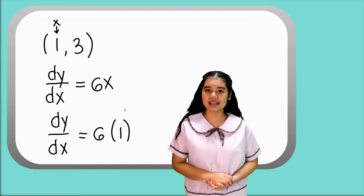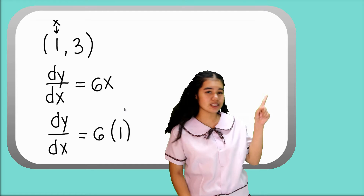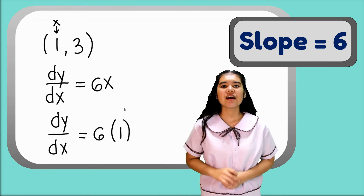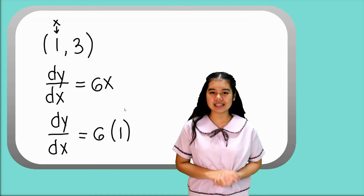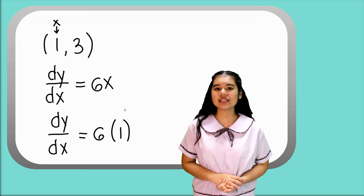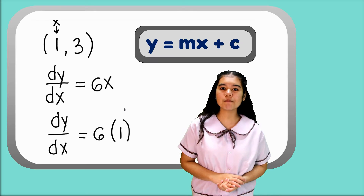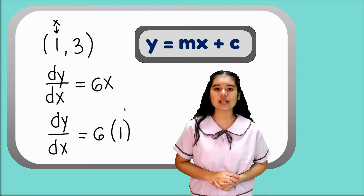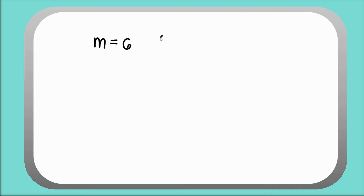Therefore, the slope of the line is equal to 6. For the last step, find the equation of the tangent line using the slope-intercept form y = mx + c. Substitute the values of x, y, and the slope to find the value of c.